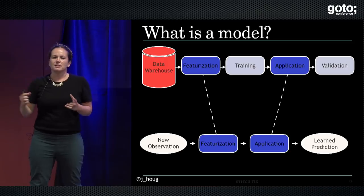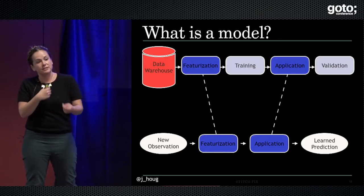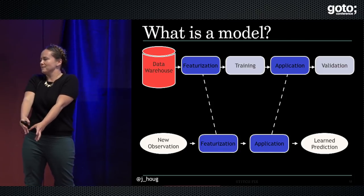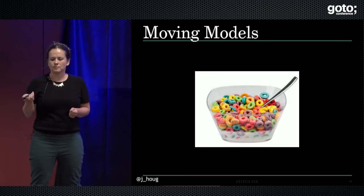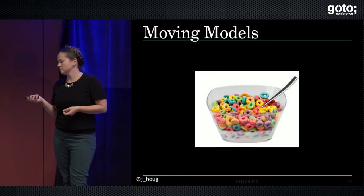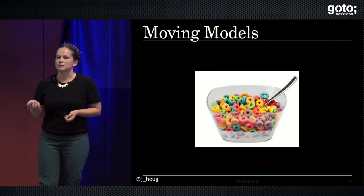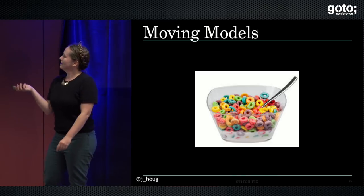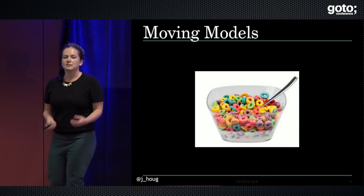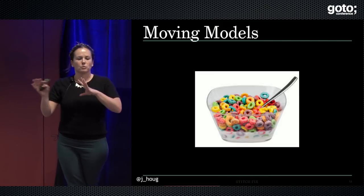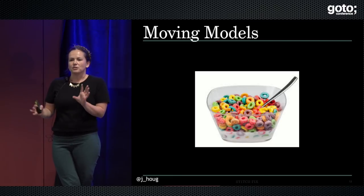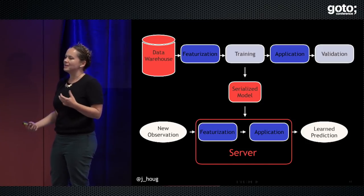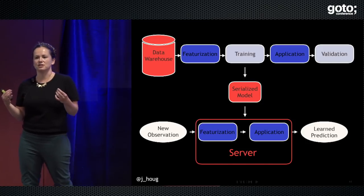How do you actually take a model and move it from the training process to an application process? You get a new observation, you apply this model through doing the same sort of featurization you did in model training, then take the model you've learned and apply it to produce a response. You move models through serialization. Serialization ends up being really important — we need some way of transporting this information between two different workflows and processes. When you're applying a model, you're not simultaneously training it.